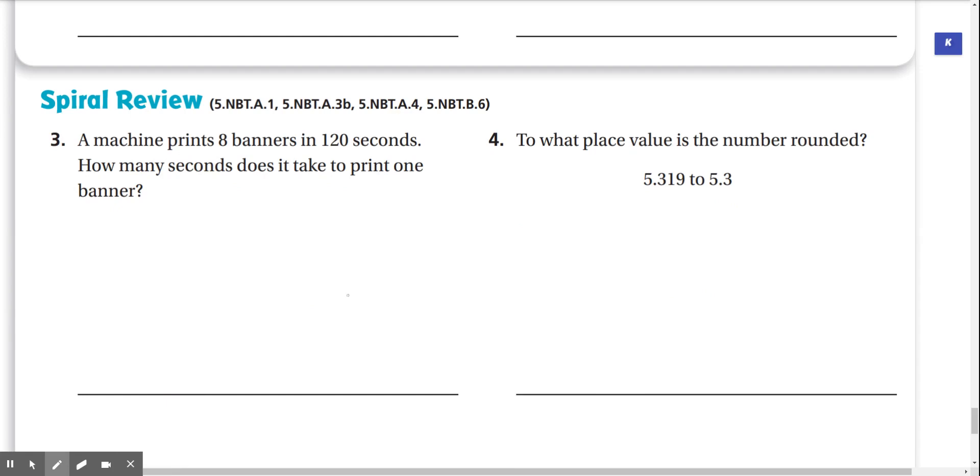Spiral review. A machine prints 8 banners in 120 seconds. How many seconds does it take to print 1 banner? So if 8 banners in 120 seconds, and we're looking for how much it takes for 1 banner, we're just going to divide 120 by 8. How many times does 8 fit into 1? 0. How many times does 8 fit into 12? Well, it only fits into 12 one time. So we do 12 minus 8, that's 4. We drop down the 0, and how many times does 8 fit into 40? That's 5. 8 times 5 is 40. So it takes about 15 seconds to print 1 banner.